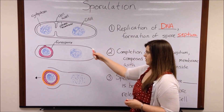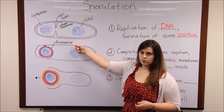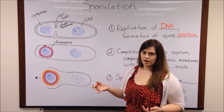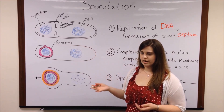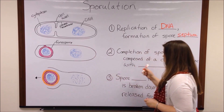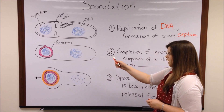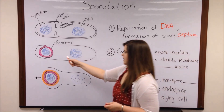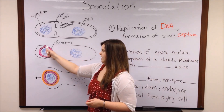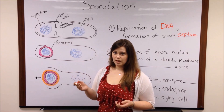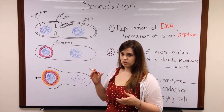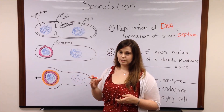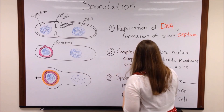This results in something called the forespore, so the precursor of the spore or endospore. This is composed of a double membrane, and then this pink layer that you see is peptidoglycan. So peptidoglycan fills the space between those two membranes.